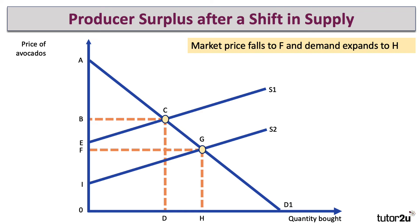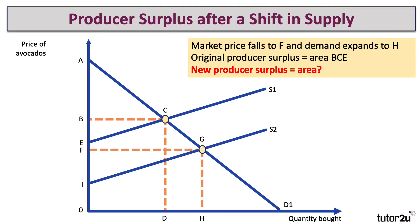What about the effect on the producer surplus? The original producer surplus was area B, C, E. Press the pause button if you want to have a quick go at this yourself — which area shows the new producer surplus? The price has come down, but the producer has lower costs. So the new level of producer surplus is the area F, G, I. That's a bigger area. Although they're selling at a lower price than before, their costs are lower. The minimum supply price is now I rather than E, and therefore producer surplus has gone up.